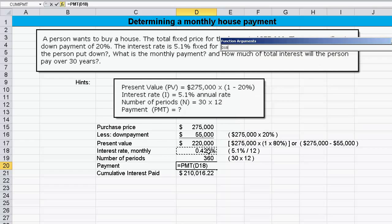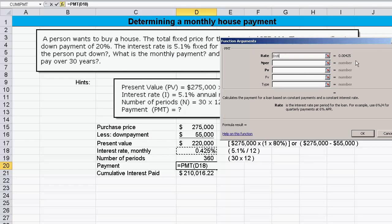What's the rate? The rate is given right there. That's the monthly rate since we're calculating a monthly payment. The number of periods given right there in cell D19. Rate was in D18.